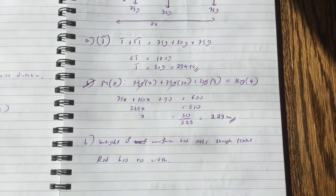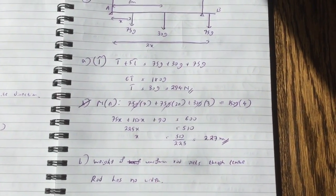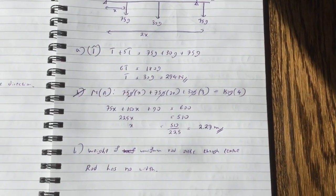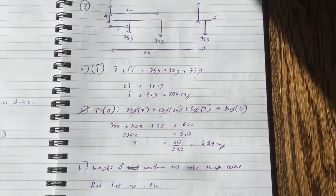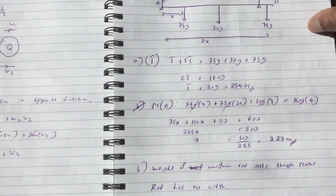So weight of uniform rod acts through center, and rod has no width. So it's obviously a straight line rod. That's question 3.